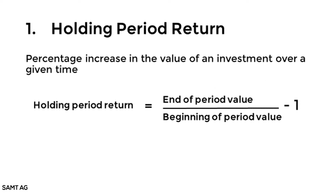Number one: holding period return. It is a percentage increase in the value of an investment over a given time. It is used to measure the total return on an asset, more likely a portfolio, over the period it was held. It's simple to calculate if you're familiar with percentages, and yes, it is expressed as a percentage. So you have: holding period return equals end of period value divided by beginning of period value, minus 1.